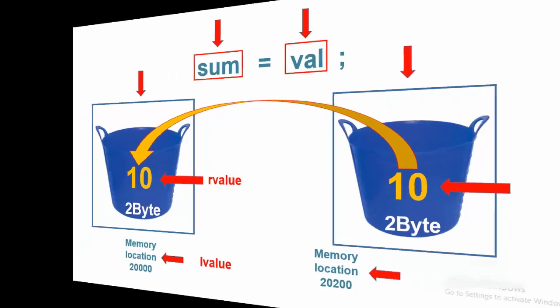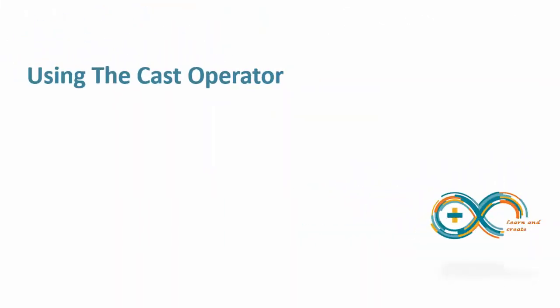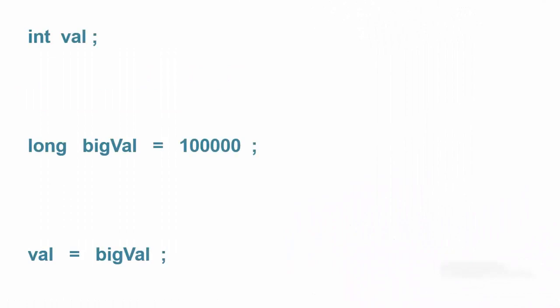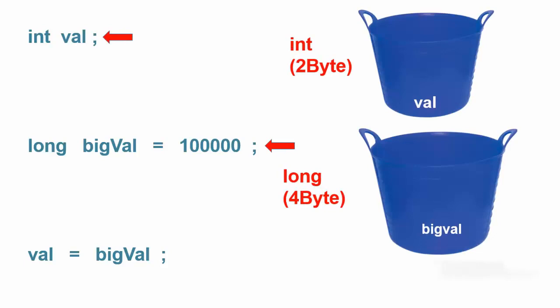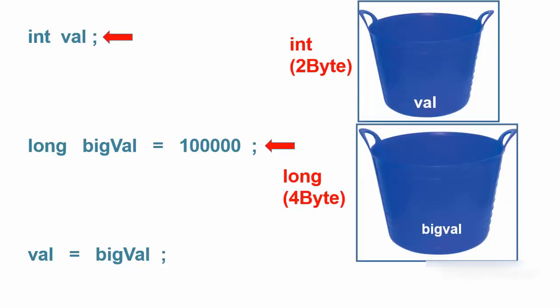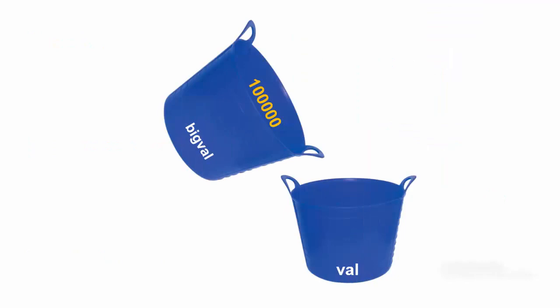Consider the following statements. The first two statements create buckets for variable val, variable bigVal and place them somewhere in the memory. As a part of its definition, bigVal also initializes its R value to one million. Now consider what happens in the last statement.